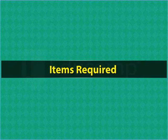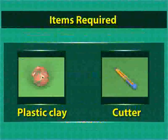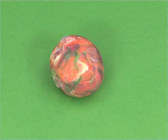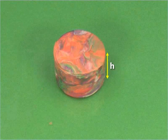For the activity, we need plastic clay and a cutter. Use the plastic clay to make a cylinder with height h and base radius r.